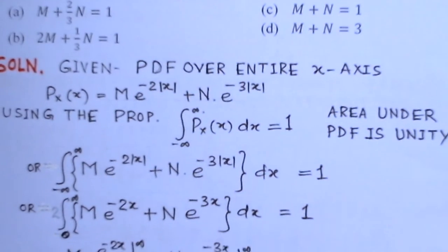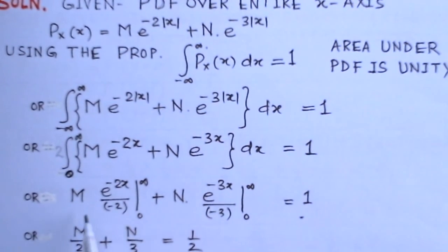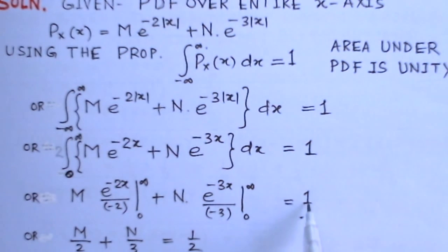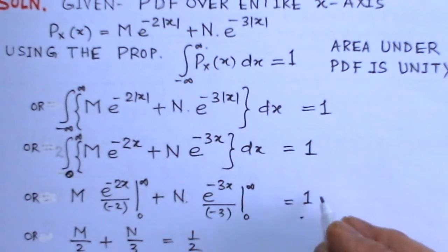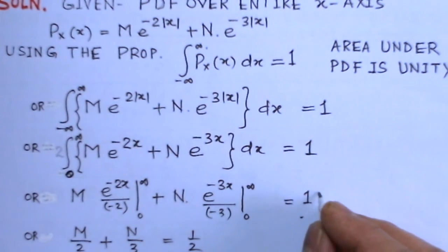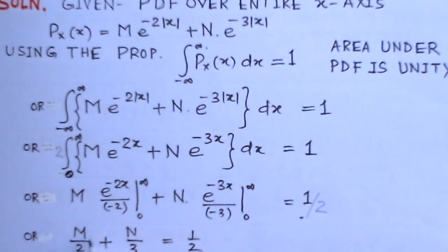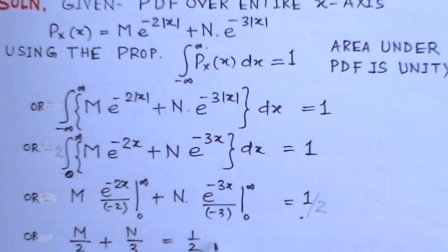Integrating: m·e^(−2x)/(−2) + n·e^(−3x)/(−3), evaluated from 0 to infinity. Applying the limits and taking the factor of 2 to the other side gives 1/2. This yields m/2 + n/3 = 1/2.